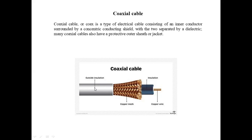So it consists of four things: first is the copper wire, then it is covered by a transparent plastic material called the insulator, then we have the mesh covering, and at the last we have the plastic jacket. The best basic example is the cable used in your homes for cable TV operators — the cable used there is similar to the coaxial cable.